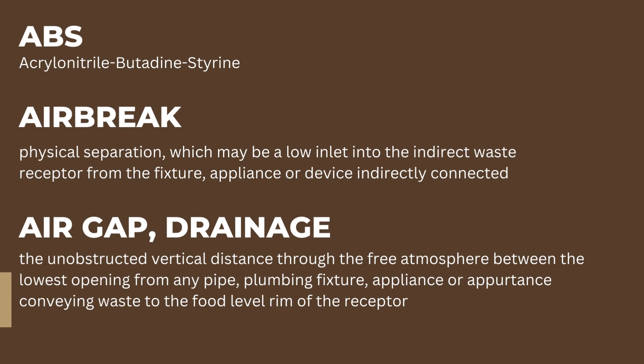ABS stands for acrylonitrile butadiene styrene. It is a black plastic pipe that is commonly used for drainage, sewage, and vents. It is also used in DWV systems — the drain waste vent — which are designed to remove waste water from a home.